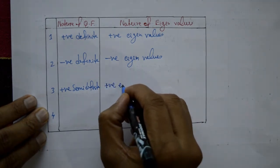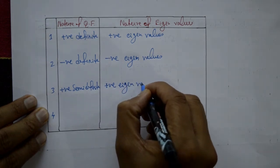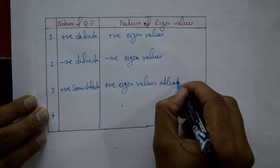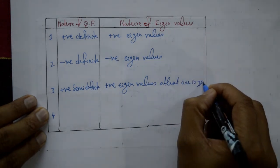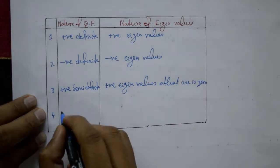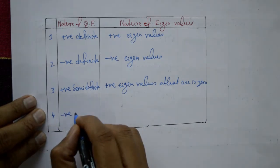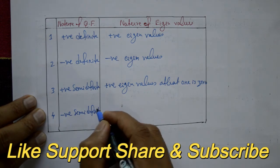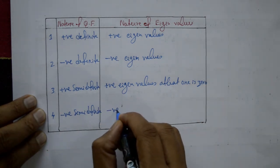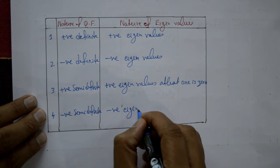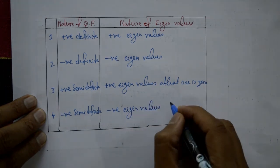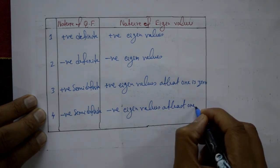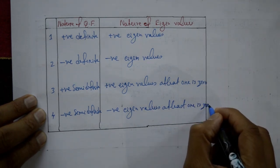The third one is positive semi-definite — the eigenvalues are positive, but at least one eigenvalue is zero. The fourth one is negative semi-definite — the eigenvalues are negative, but at least one eigenvalue is zero.